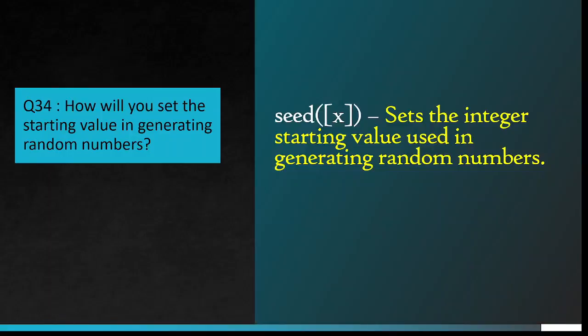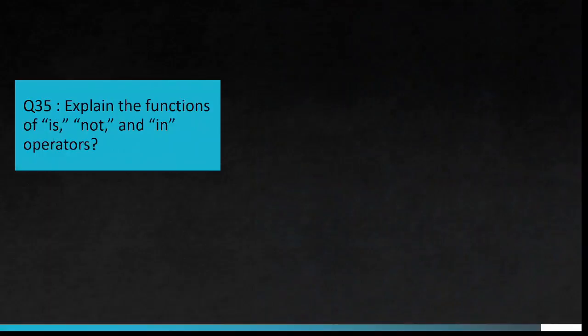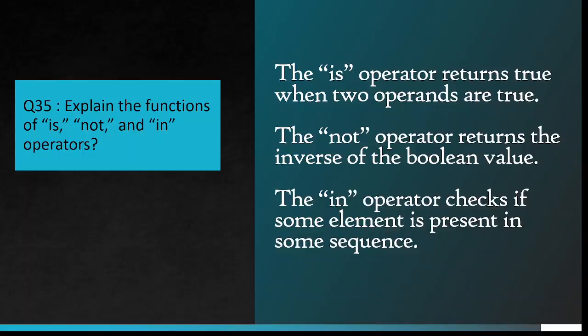Question number 34: How will you set the starting value in generating random numbers? seed(x) sets the integer starting value used in generating random numbers. Question number 35: Explain the functions of is, not, and in operators. The is operator returns true when two operands are true. The not operator returns the inverse of the boolean value. The in operator checks if some element is present in some sequence.